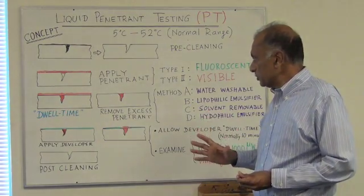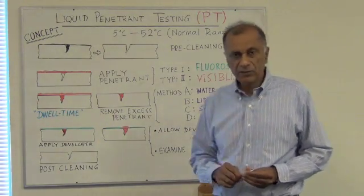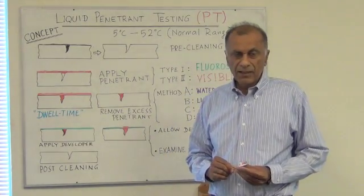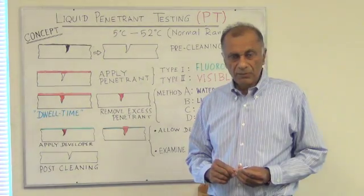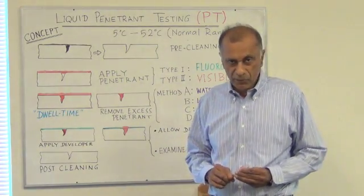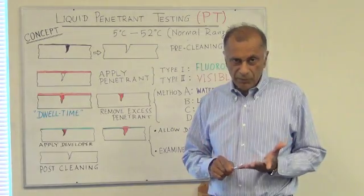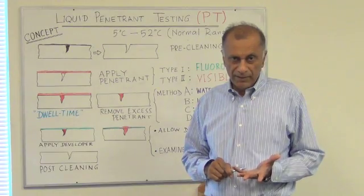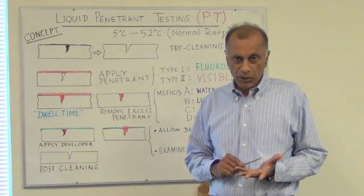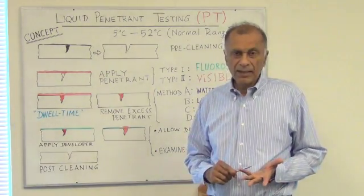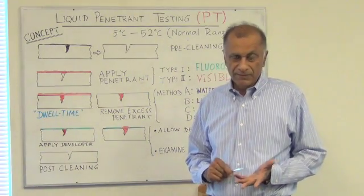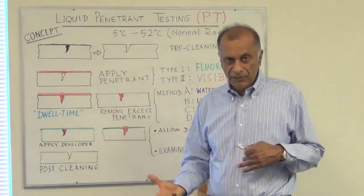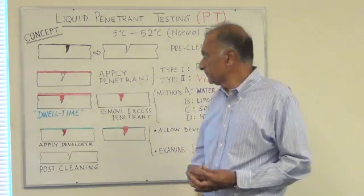After the dwell time is over, the penetrant has to be removed from the surface. There are 3 basic methods of penetrant removal: the solvent removable method which uses a solvent; the water washable method in which water is sprayed over the surface; and the emulsifier method in which an emulsifier is used to emulsify the penetrant and make it water soluble.